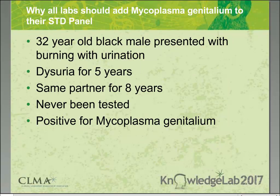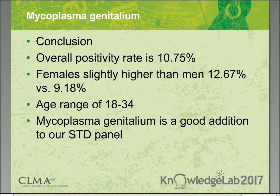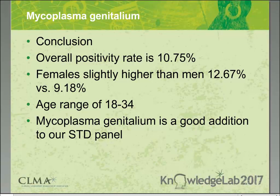Another case involved a thirty-two-year-old male with dysuria for five years who had been with the same partner for eight years and had never been tested. When tested, he came up positive for MGEN. Through all studies conducted in 2016, the overall positivity rate was ten-point-seventy-five percent — females slightly higher than males at twelve-point-sixty-seven versus nine-point-eighteen percent — in a population ranging from eighteen to thirty-four years of age due to the high college student population.